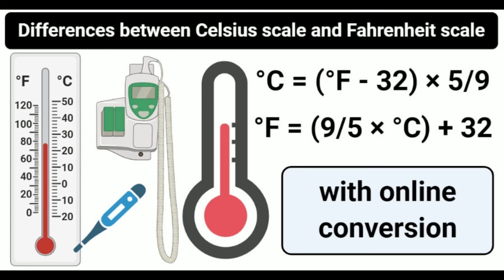The average human body temperature as measured on the Celsius scale is 37°C, while on the Fahrenheit scale it is 98.6°F. The absolute zero value on the Celsius scale is −273.15°C, and on the Fahrenheit scale it is −459.67°F. The range between the melting and boiling points of water is divided into 100 equal divisions on the Celsius scale, each representing 1°C, and into 180 equal intervals on the Fahrenheit scale, each denoting 1°F.